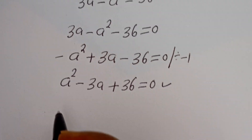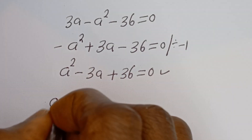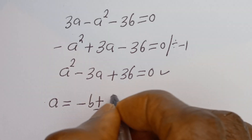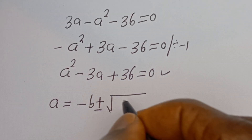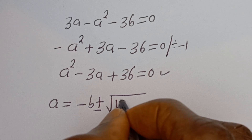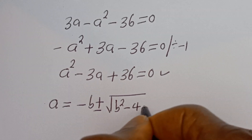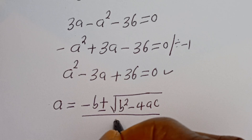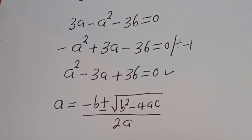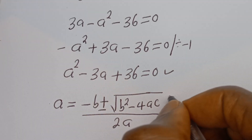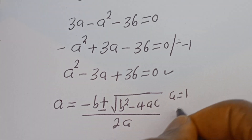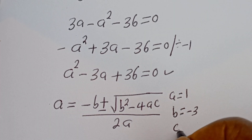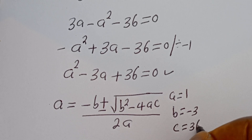Let's solve this using the quadratic general formula: A equals minus b plus or minus square root of b squared minus 4ac, divided by 2a. Then from this equation, a equals 1, b equals minus 3, and c equals 36.